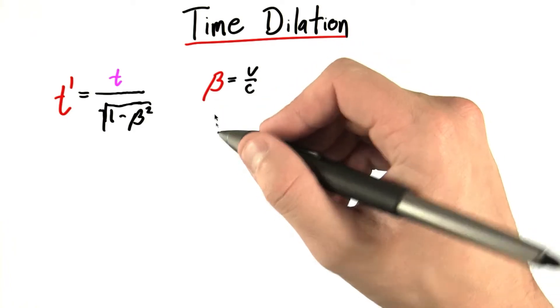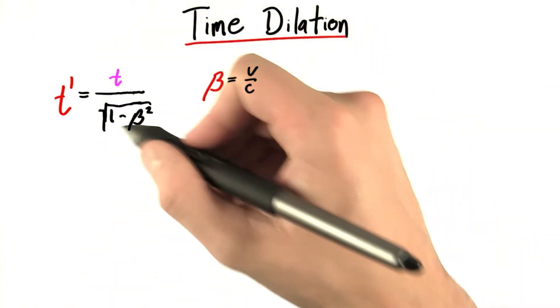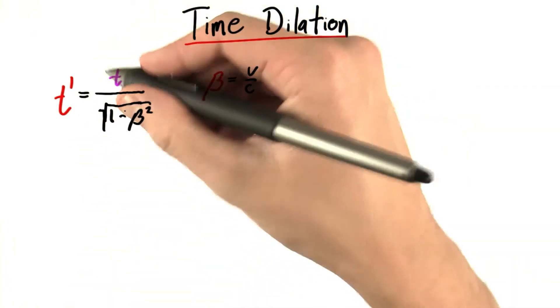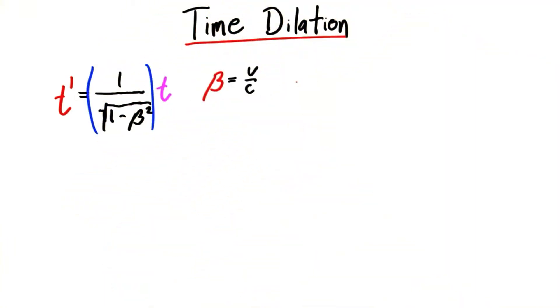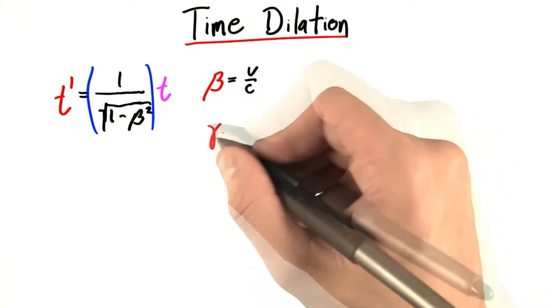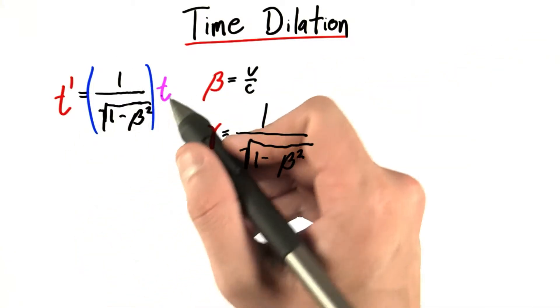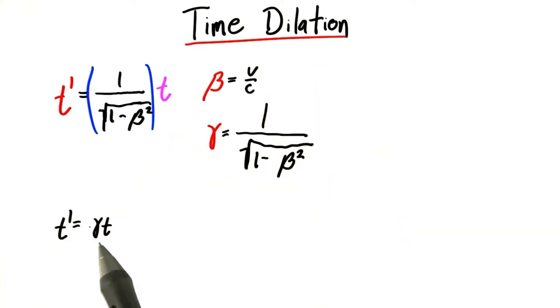And as long as we're polishing things up, let's go one step further. And instead of writing t prime like this, let's pull the t out and give this quantity in parentheses its own name. And the name we're going to give, well, we've seen alpha and beta. It's time for the next Greek letter is gamma. So now, our complicated equation becomes t prime equals gamma t.